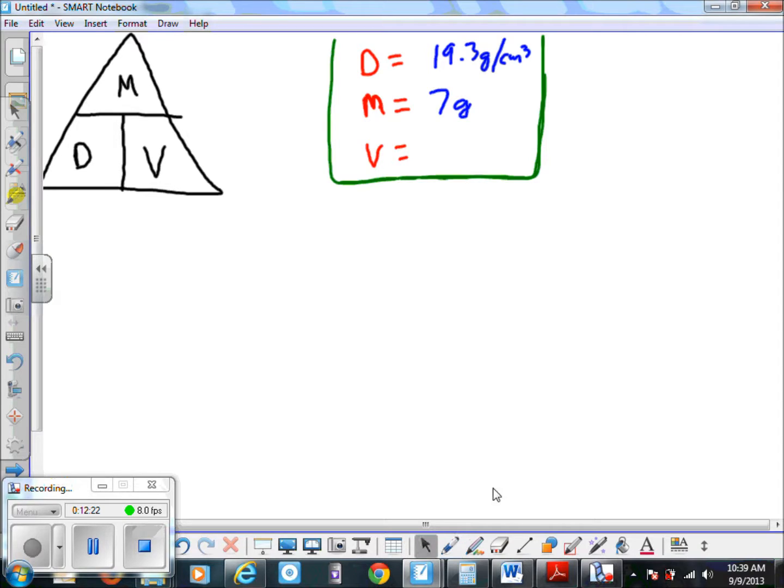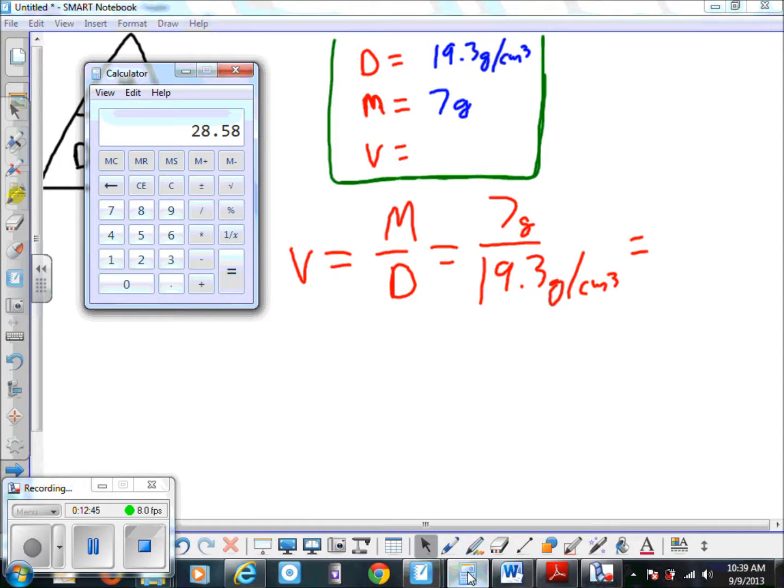So we were looking for volume. Volume equals - we cover up volume in our magic triangle and we see we have mass over density. In this case, we have seven grams over 19.3 grams per cubic centimeter. You pull up your calculator and seven divided by 19.3 is equal to 0.3627.